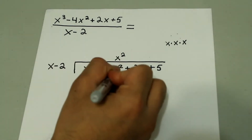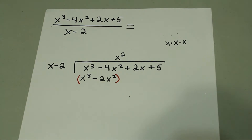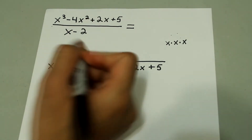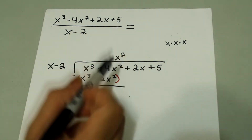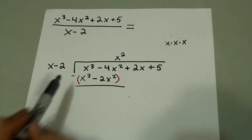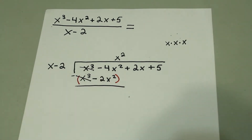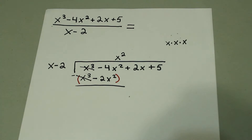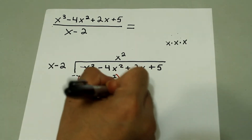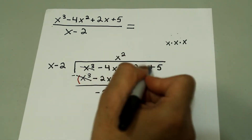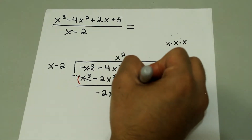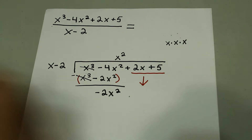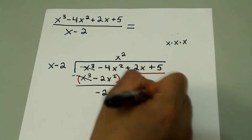Now we have to subtract this entire quantity from the top, so it's better to put parentheses around it so we don't mess up the signs. If we chose the right term and multiplied correctly, the first term should always cancel. Next we have negative 4x squared minus negative 2x squared, which is negative 2x squared, and we bring the rest of the original numerator down: plus 2x plus 5.